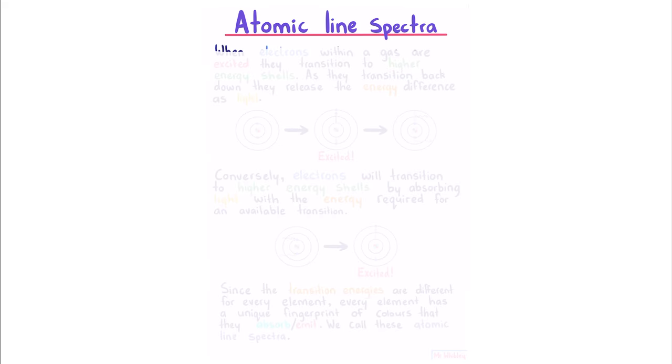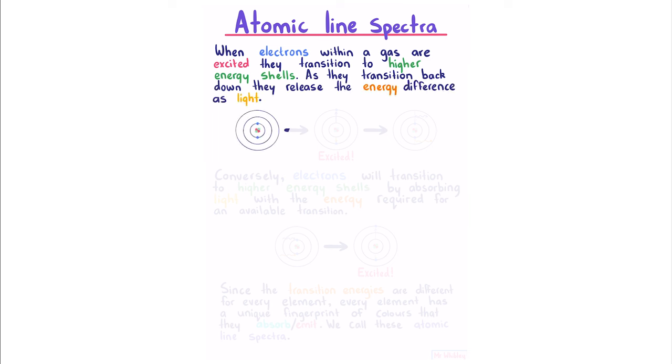Atomic line spectra. When electrons within a gas are excited, they transition to high energy shells. As they transition back down, they release the energy difference as light. So we have our atom, we excite our electrons to higher shells, and they drop back down and emit light.